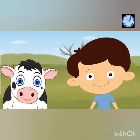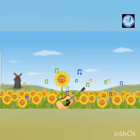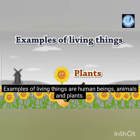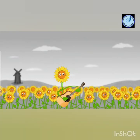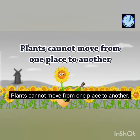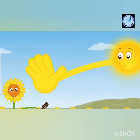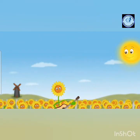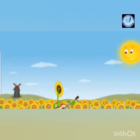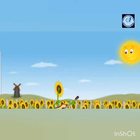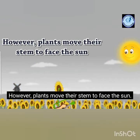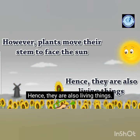I can hear some music from the sunflowers. Yes, plants generally cannot move from one place to another, but the sunflower — they can turn their stem towards the sun. Plants move their stem to face the sun, hence they are also living things.